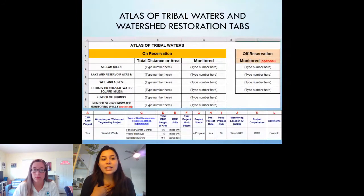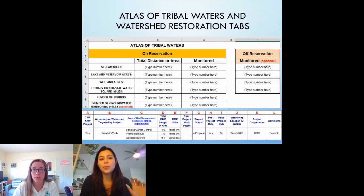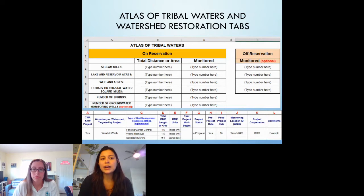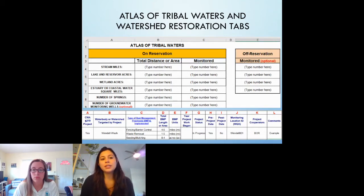This slide shows screenshots from two other tabs in the water quality assessment spreadsheet. The top one is the tab for Atlas of Tribal Waters, which you can think of as an inventory of your surface waters monitored. This shouldn't change too much year to year unless new land or waters are put into trust. Below is a screenshot of the watershed restoration tab, which is a place to describe which projects you've been implementing to address specific water quality concerns. These are often, but not always, 319 projects.